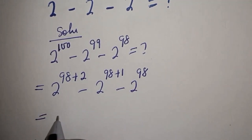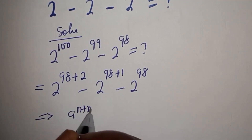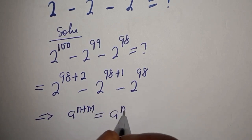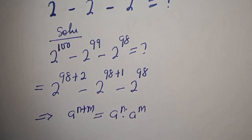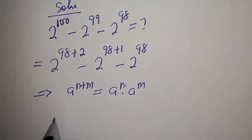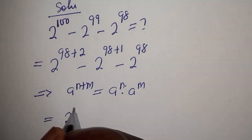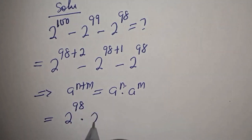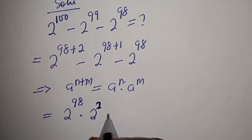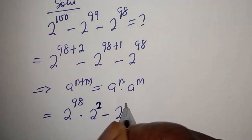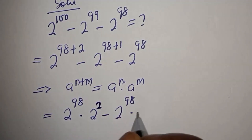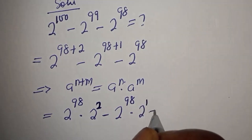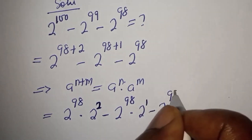This is equal to — if you have a raised to power n plus m, this is equal to a raised to power n multiplied by a raised to power m. So this can be written as 2 raised to power 98 multiplied by 2 raised to power 2, minus 2 raised to power 98 multiplied by 2 raised to power 1, minus 2 raised to power 98.